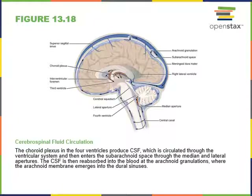Cerebrospinal fluid is first produced in the choroid plexus of the ventricles. It circulates from the lateral ventricles down through the interventricular foramen to the third ventricle, then through the cerebral aqueduct to the fourth ventricle. From the fourth ventricle, cerebrospinal fluid can either flow down into the central canal of the spinal cord or flow out through the lateral and median apertures into the subarachnoid space. It then flows through the subarachnoid space around the brain and spinal cord and drains through the arachnoid granulations into the dural sinuses.